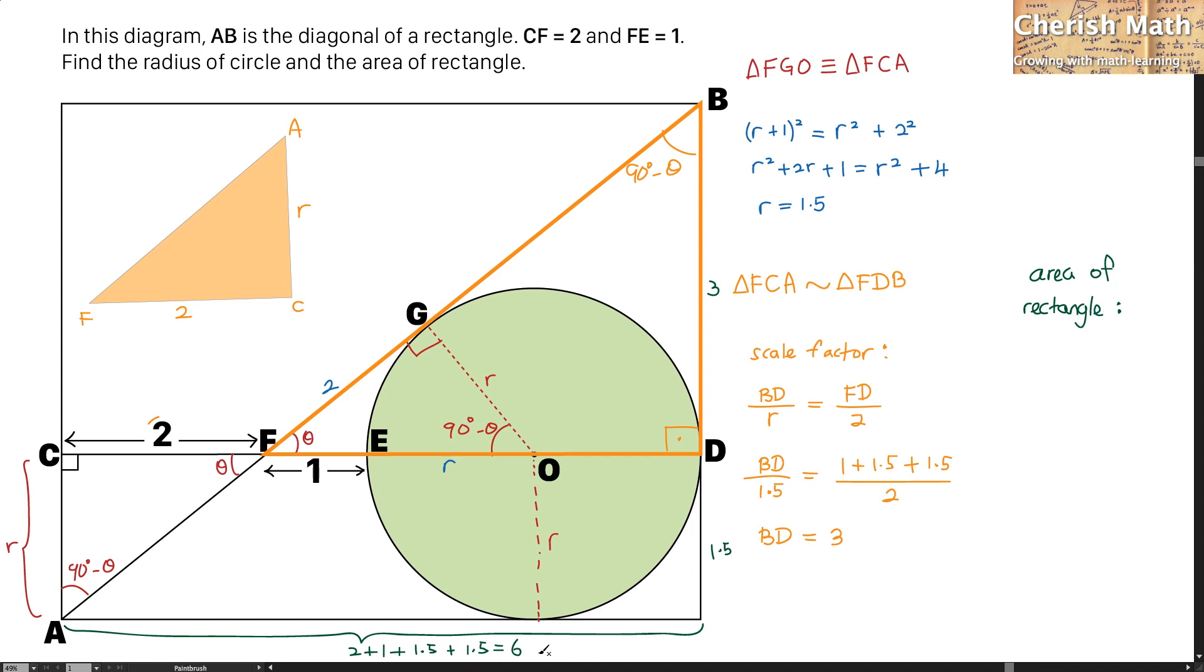I'll be using the value of 6 as the base length multiply the height of the rectangle that will be 3 plus 1.5.